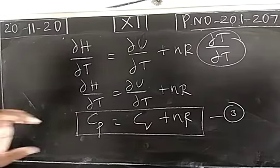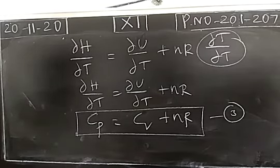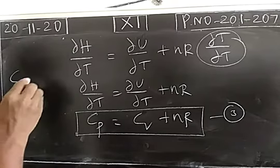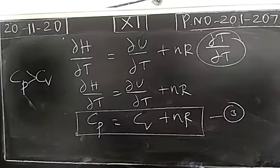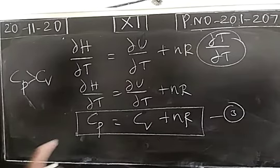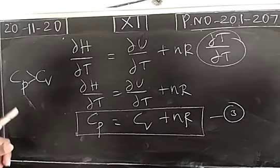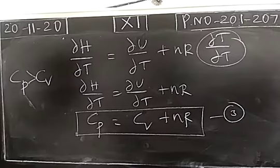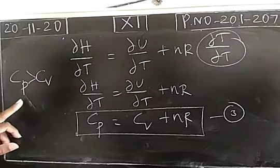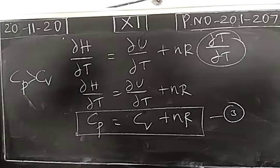From this relationship, we observe that Cp is always greater than Cv. Compared to Cv, the Cp value is always greater. This is because at constant pressure, the system needs more energy — it absorbs more heat energy to do work at constant pressure. So Cp is always greater than Cv.